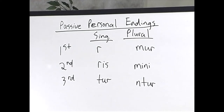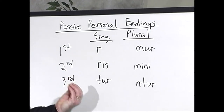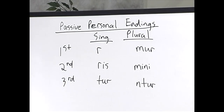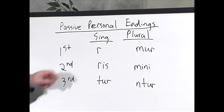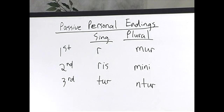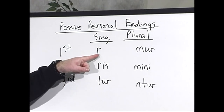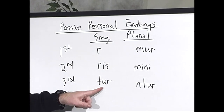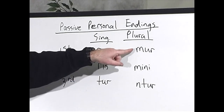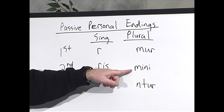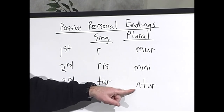Remember, the personal endings of a verb function the way pronouns function in English. The passive personal endings are: -r (first person singular), -ris (second person singular), -tur (third singular), -mur (first plural), -mini (second plural), -ntur (third plural).